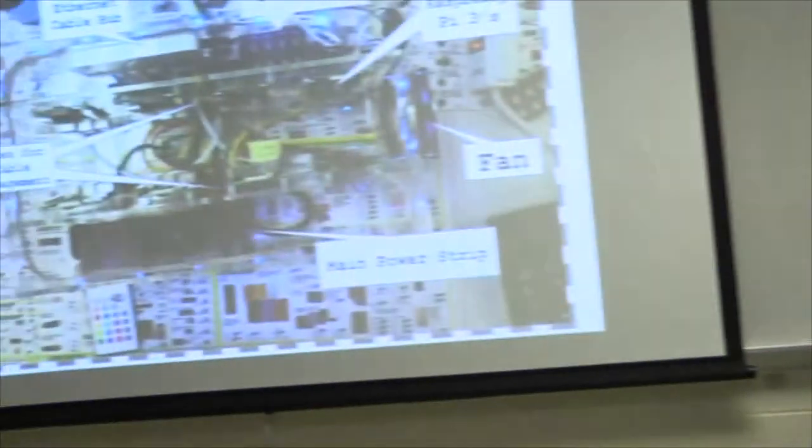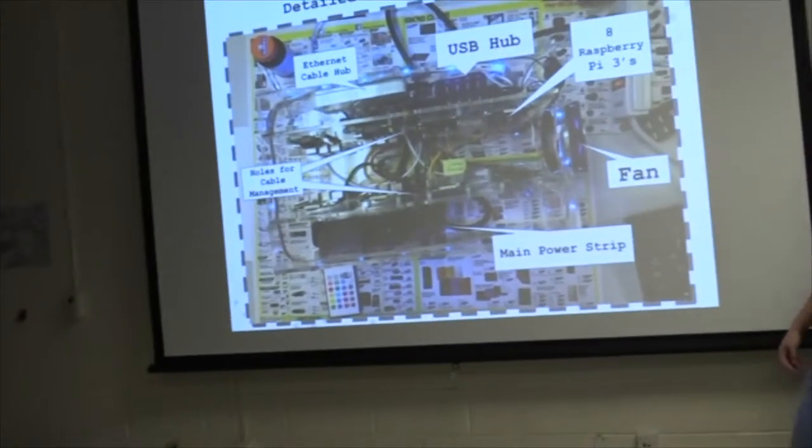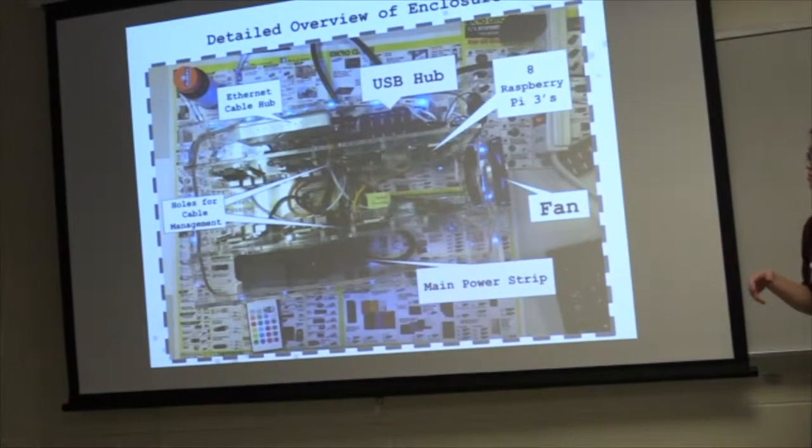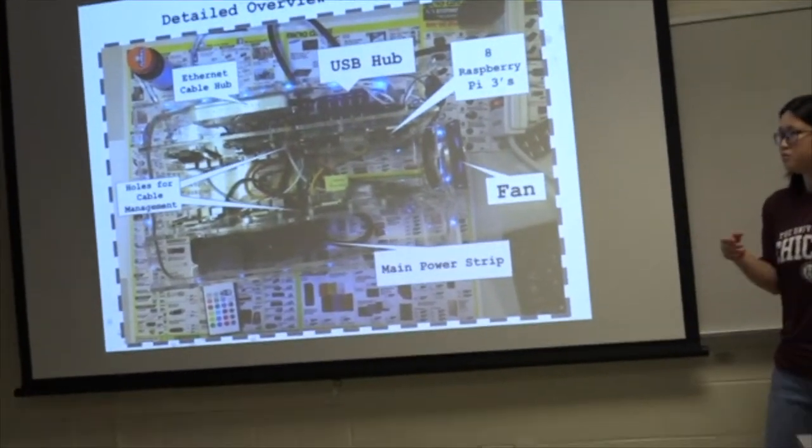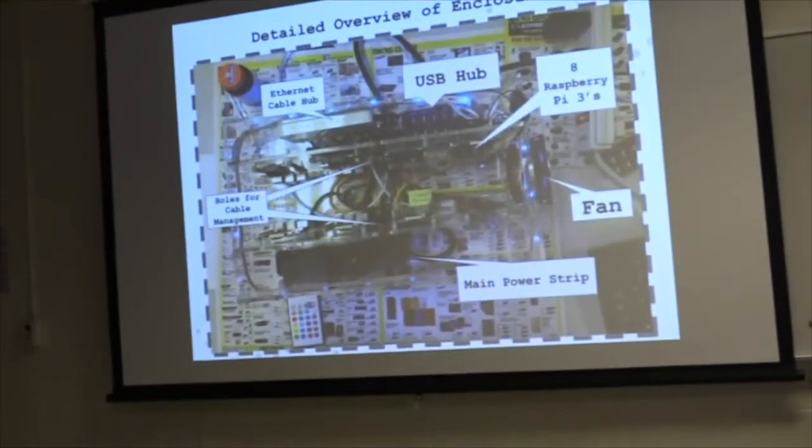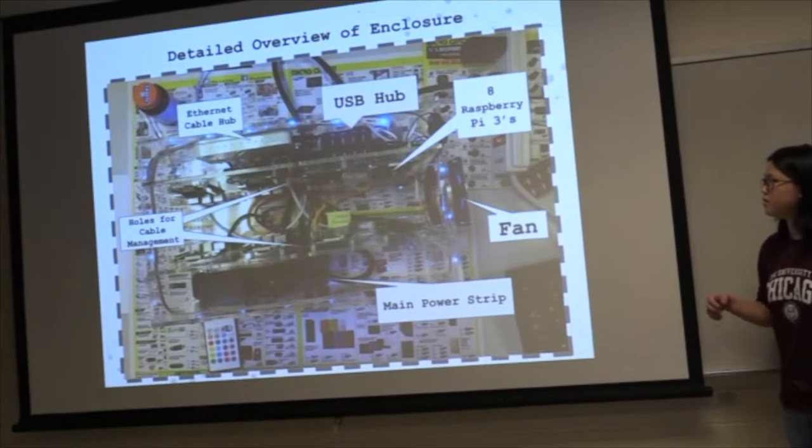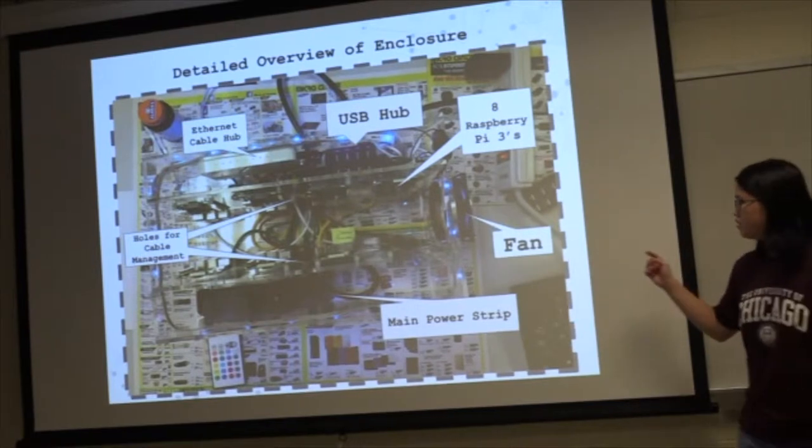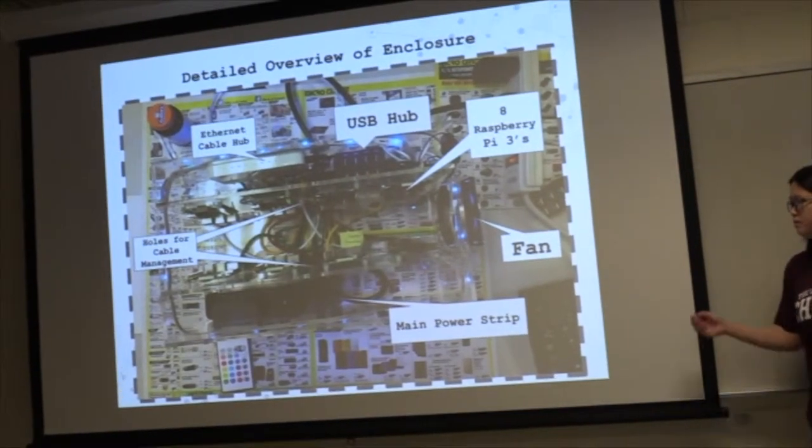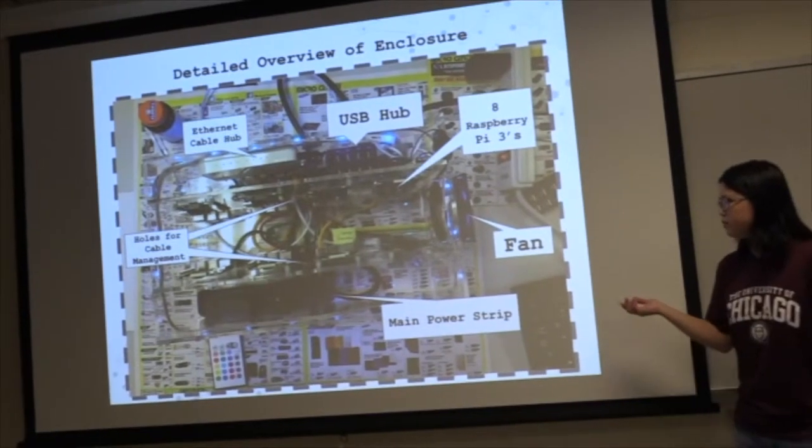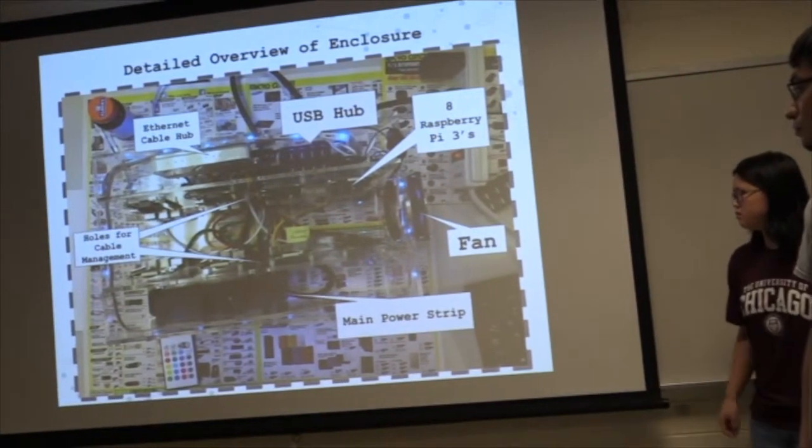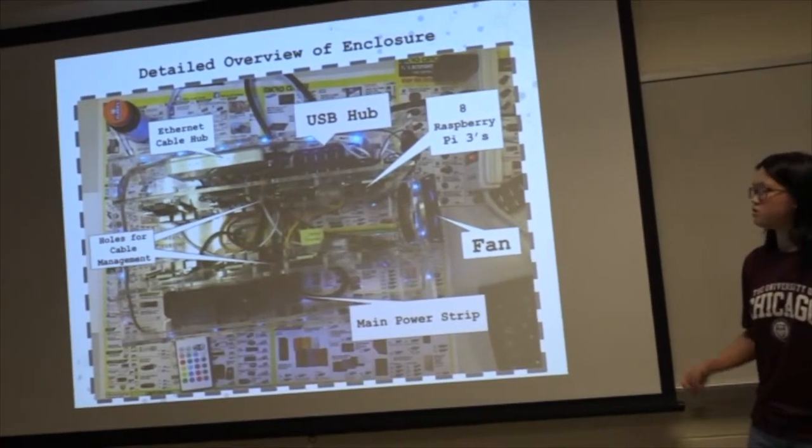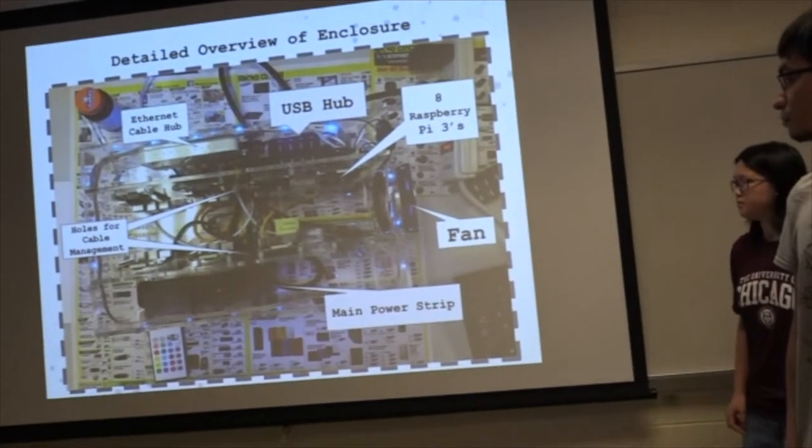Okay, so this is a bird's eye view of our enclosure. Basically, we had a few components that were too... We changed the USB hub because the previous one was a 13-port and it did not have enough power to supply all these Pis. So we increased it to a 10-port hub that's 60 watts. And the main power strip originally was too long, so it would not be able to fit into the case. So we just bought a three-outlet surge-protective power strip. And you see the fan, the holes for cable management. It's still a little compact because some of the wires are still in the way, but we can fix that.